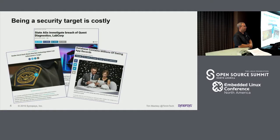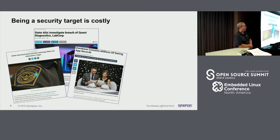Being a security target today is a hugely big deal. In a three-week period from May into June, we had disclosure from a company called AMCA who was breached — a credit processing company behind LabCorp and Quest Diagnostics. We had records from Customs and Border Protection on travelers' faces. And we had information from a dating site that believed encryption meant just hashing in XOR.